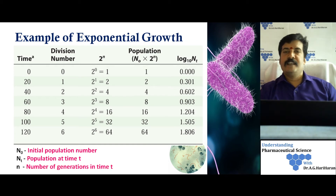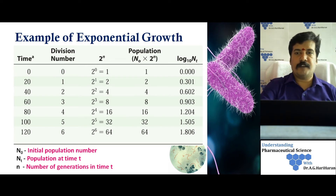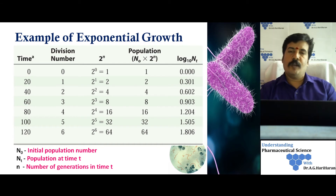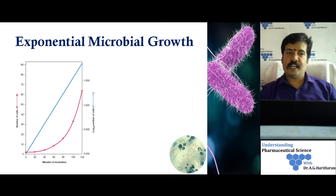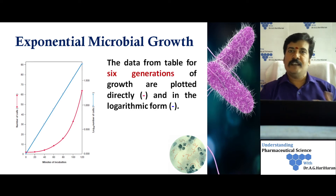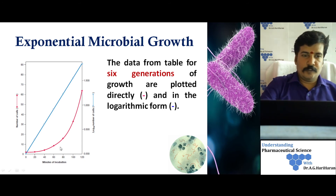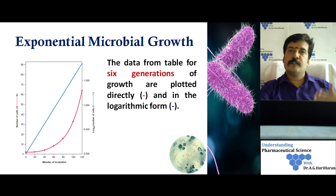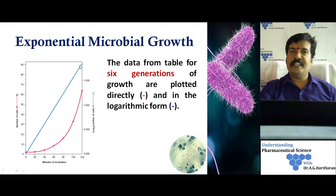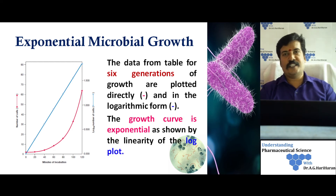If we plot the data in two ways — time of incubation against number of viable cells, and time against the logarithm of viable cells — we see a key difference. Plotting time against raw cell numbers gives a parabolic curve, which is mathematically unhelpful for calculating generation time or growth rate constant. Plotting on a semi-log paper gives a linear graph, which allows us to calculate generation time directly. The growth curve in the exponential phase is therefore plotted on semi-log paper.